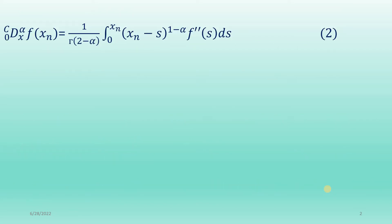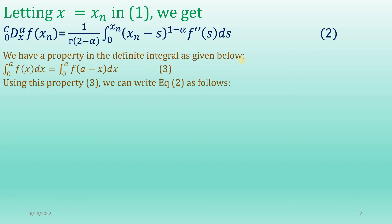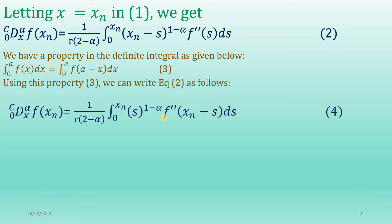In equation 1, replace x by xn and you will obtain equation number 2. We then use a property of definite integrals, shown as equation number 3. Applying this property to equation 2 reduces it to equation number 4, where xn minus s replaces s and the second derivative argument becomes xn minus s accordingly.